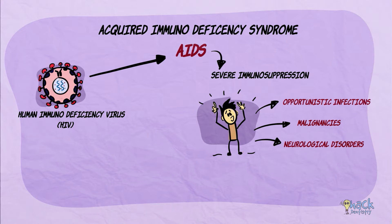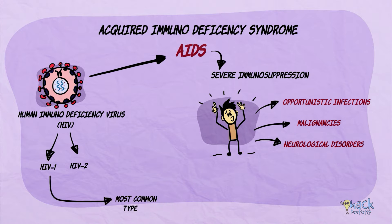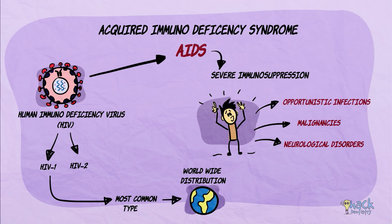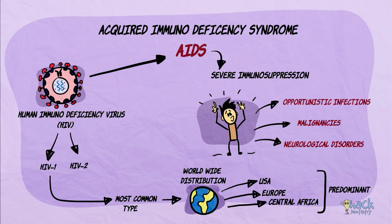There are two different species of HIV: HIV-1 and HIV-2. HIV-1 is the most common type causing AIDS and has a worldwide distribution, mostly predominating in the United States, Europe, and Central Africa. HIV-2 is mostly found in cases in Western Africa and India.